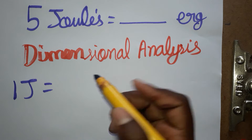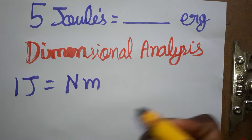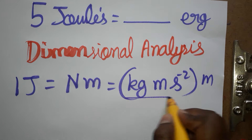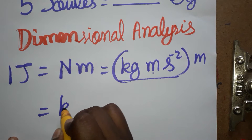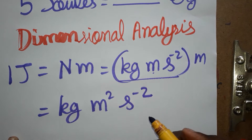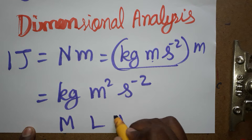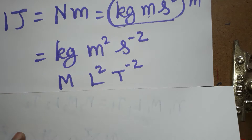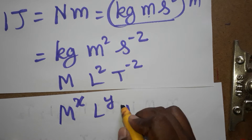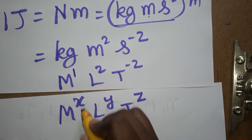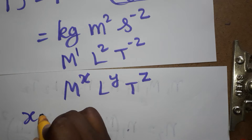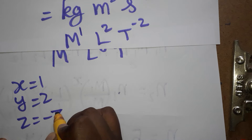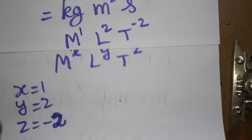One joule — energy is force into displacement, which is called newton meter. Newton is mass into acceleration, so we take it as kg·m·s⁻². Multiplying by meter gives kg·m²·s⁻². So the dimensional formula is M¹L²T⁻², meaning x=1, y=2, z=−2.